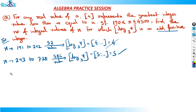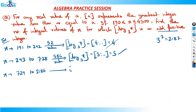Next, x moves from 729 to 2186 — I don't take this range because log of x base 3 here gives 6-point-something, meaning GIF = 6, which is even, so not our concern.